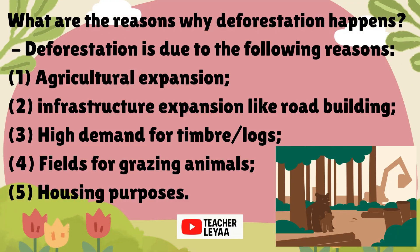What are the reasons why deforestation happens? Deforestation is due to the following reasons: Number 1, agricultural expansion; Number 2, infrastructure expansion like road building; Number 3, high demand for timber or logs; Number 4, fields for grazing animals; Number 5, housing purposes.